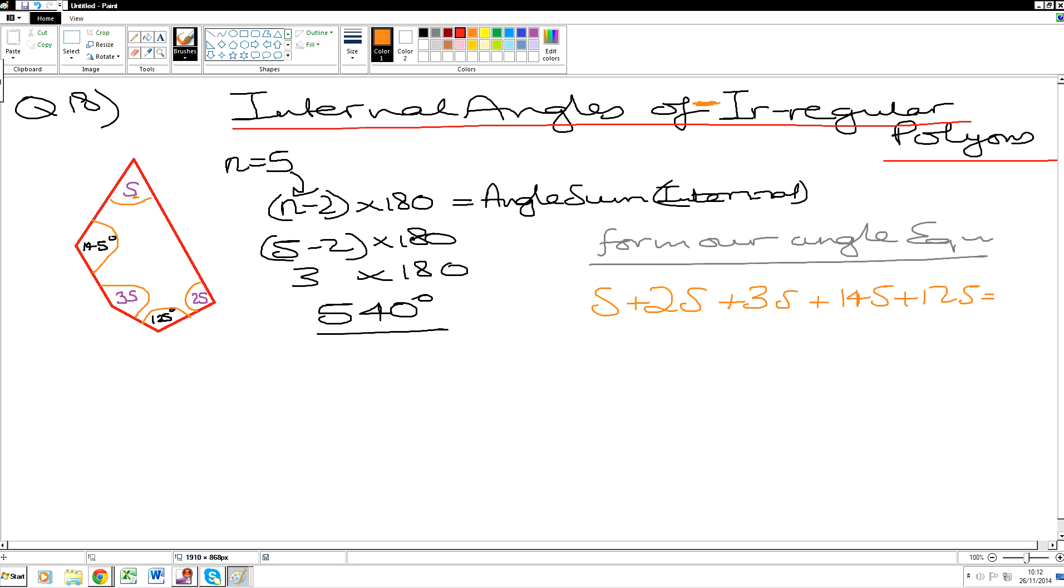And that should give us an answer of what? All of them should give us an answer of 540. So whether you're trying to work out one missing angle or in this case three missing angles. The algebra here, if you look over here, you have S, add 2S, add 3S. So the S is the common term here. 1S, add 2S is 3S. 3S, add another 3S gives us 6S. So that gives us 6S.